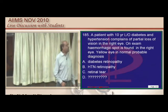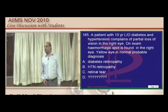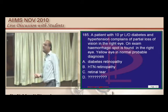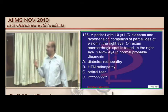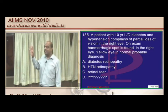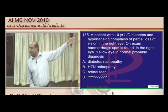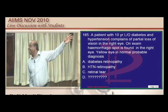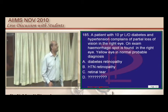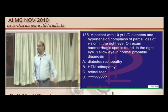A patient with 10-year history of diabetes and hypertension with a hemorrhagic spot in the right eye: both diabetic retinopathy and hypertensive retinopathy cause flame-shaped hemorrhages. If one eye is normal and the other abnormal, there may be a deeper point to consider.